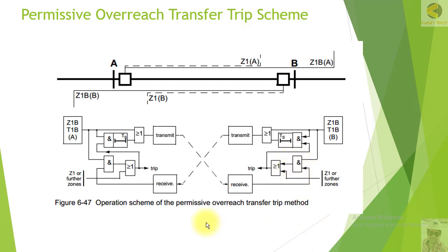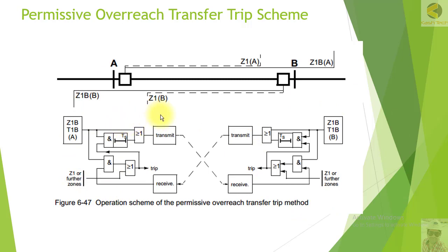It also needs a permissive signal at the remote end. When the permissive signal is available — for example, the relay at the remote end has also seen a fault in the forward direction — then both inputs are 1, this is an OR case, and the relay will give a tripping command. Alternatively, if the relay picks up in zone 1 it gives immediate tripping, or if it picks up in Z1B and also receives a remote signal it will trip. This is how the permissive overreach transfer trip scheme works for station A and station B.